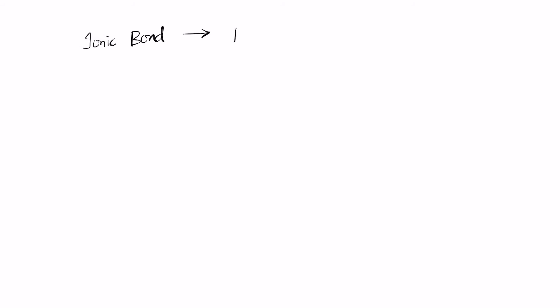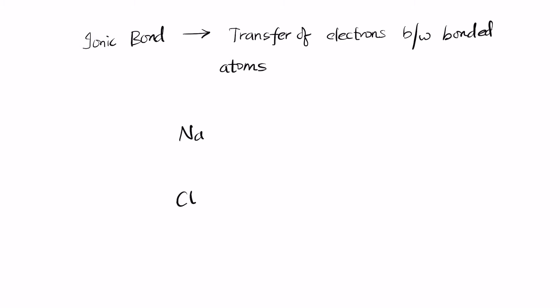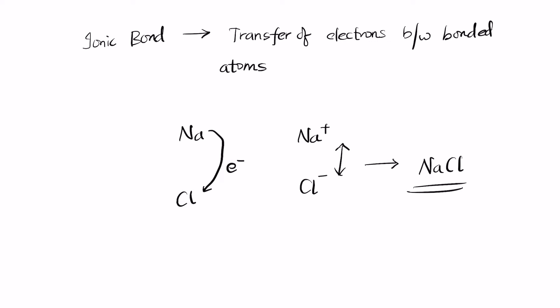An ionic bond refers to the transfer of electrons between bonded atoms. Sodium donates an electron to chlorine, creating Na⁺ and Cl⁻, and both combine to form NaCl. This is an example of an ionic bond inside a crystal structure. The name itself says it: ionic bonds are bonds between ions.